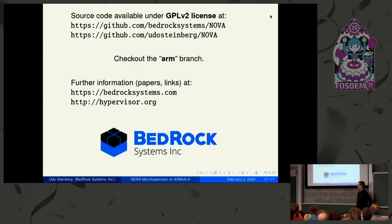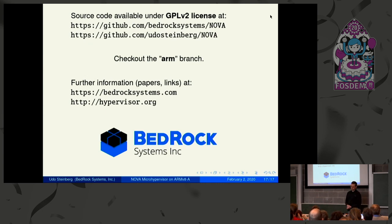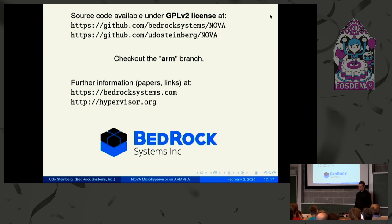We just made the source code of the Nova ARM port public. Like the rest of Nova, it's available under GPL v2 license. You can download it from the Bedrock Systems repository or from the original Nova repository. Be sure to pick up the ARM branch, not the old x86 branch. There are also web pages with further information, papers, and links.